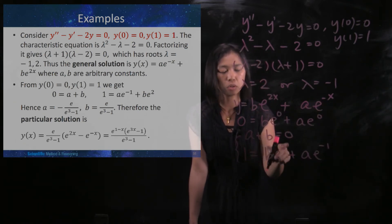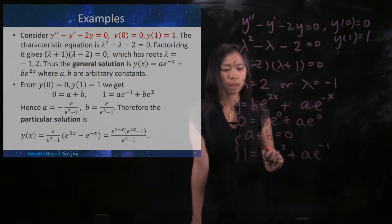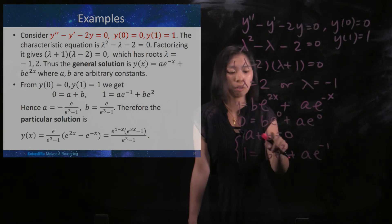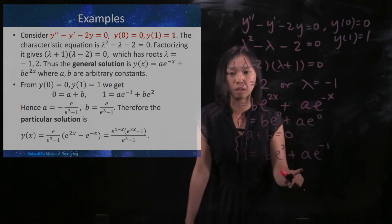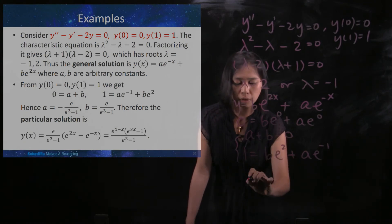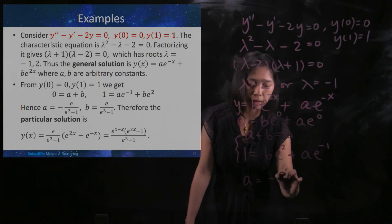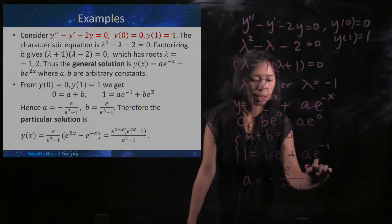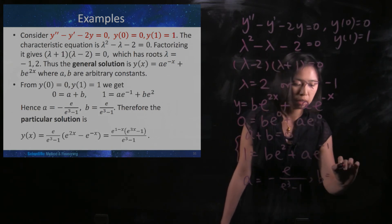Right now you got two equations and you need to solve for your a and your b. I believe you have learned how to solve simultaneous equations in your junior secondary schools. Then after solving this, we find that a = -e/(e³ - 1) and b = e/(e³ - 1).